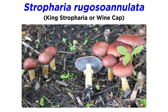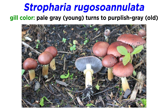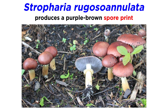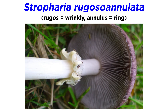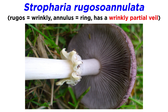Stropharia rugosannulata, the king's stropharia or wine cap, is a large edible mushroom that is usually found breaking down wood chips, so this fungus is relatively easy to cultivate for consumption. It has a wine-red cap color when young that fades to yellow-beige when old. The gills transition from pale gray to purplish gray as they age and produce a purple-brown spore print. The stipe is white to yellow-white. The species name rugosannulata is derived from two Latin roots: 'rugos,' meaning wrinkly, and 'annulus,' which means ring — so this species has a wrinkly partial veil.